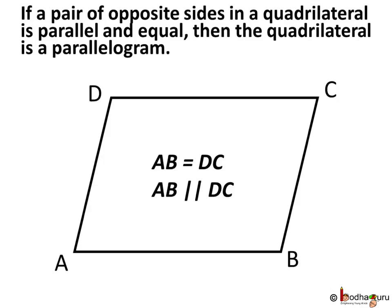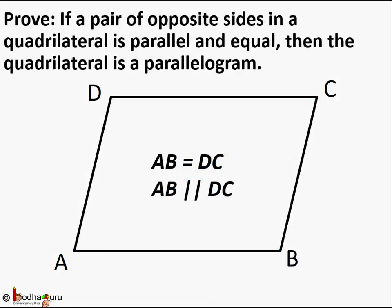Let's prove it: if a pair of opposite sides in a quadrilateral is parallel and equal, the quadrilateral is a parallelogram. We draw a quadrilateral ABCD in which a pair of sides is parallel and equal. Say AB is parallel to DC and AB is equal to DC.